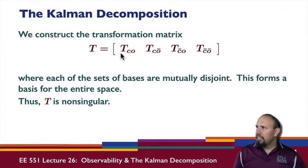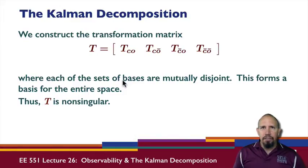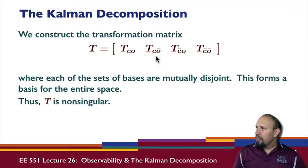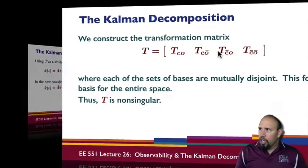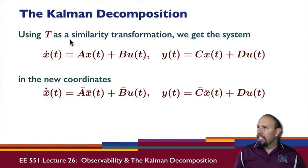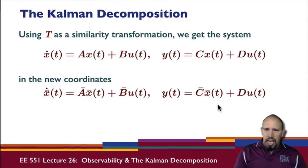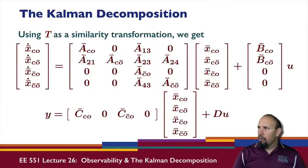We can take these bases and put them together in a matrix. A basis for a subspace is just a set of linearly independent columns. Since each of these subspaces are independent of one another, this combined matrix is a basis for the entire space, and so this matrix is non-singular. We can use that to create a similarity transformation — we take our system and put it into the new coordinates.